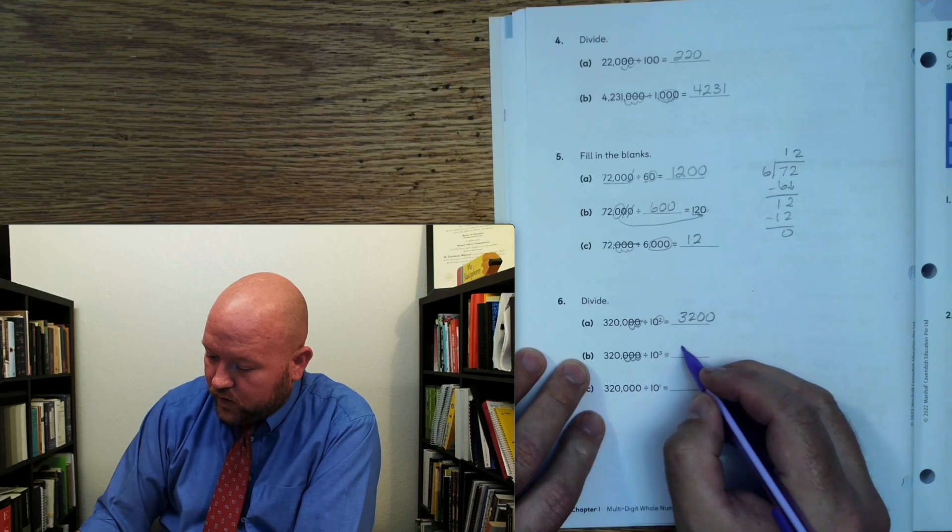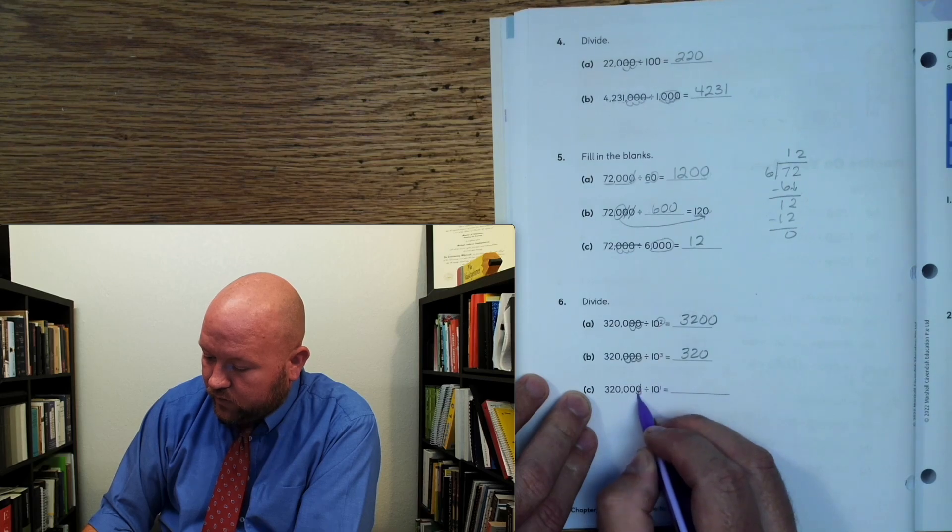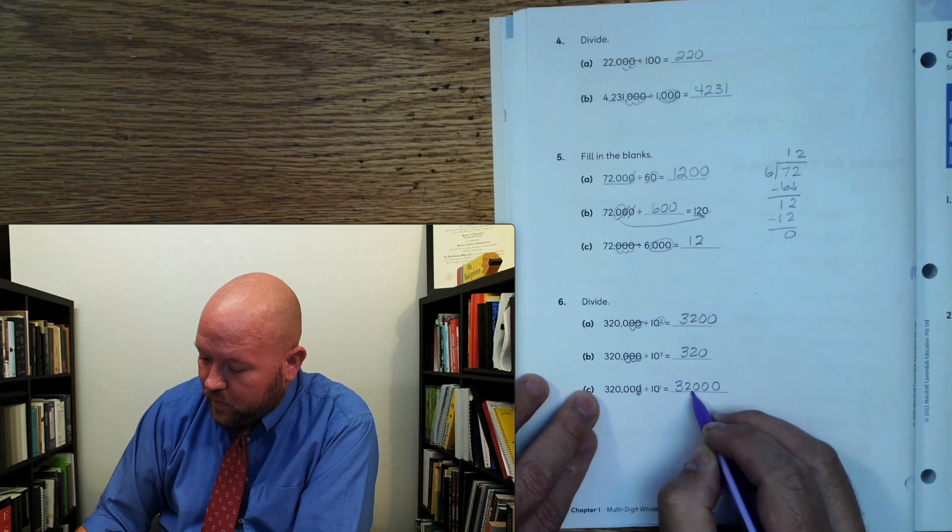Now here we're dividing by powers. So we take away two zeros — that leaves 3,200. Moving over three places — one, two, three — get rid of those, leaving 320. And moving over one place — get rid of that one — leaves 3,200. Well, that is the end of our lesson for today. I hope you have a terrific day — I look forward to seeing you next time. Bye.